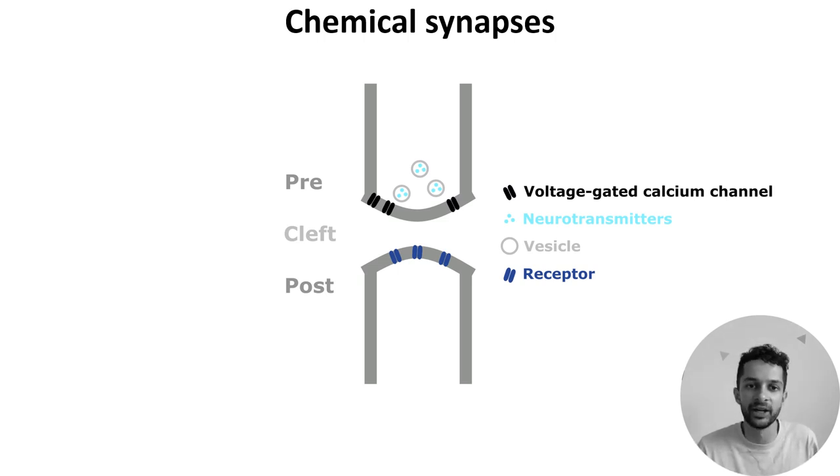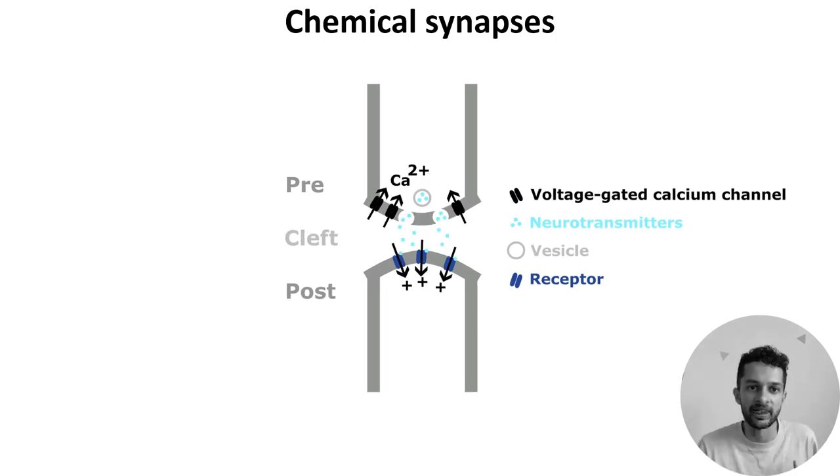And while it's often drawn like a gap, there are actually proteins which reach across it and hold the entire junction together. When an action potential reaches the axon terminal, the influx of ions depolarizes the membrane and causes voltage-gated calcium channels to open and calcium to flow into the cell. This causes the synaptic vesicles to fuse with the cell membrane and release their neurotransmitters into the cleft. The neurotransmitters then diffuse across the cleft and bind the post-synaptic receptors, triggering different effects.